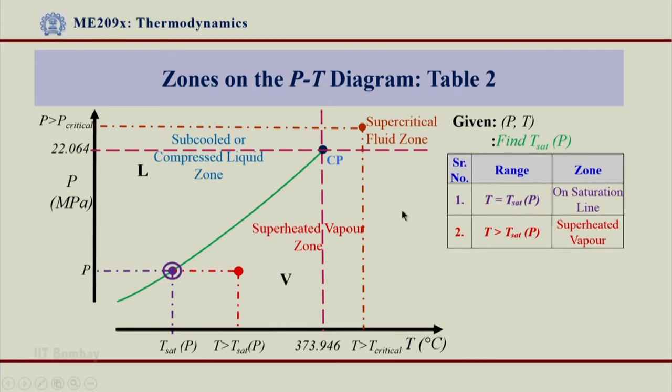Now, the third case is if temperature is less than T_sat(P), then obviously the state lies in a subcooled or compressed liquid zone. I think it is very simple to understand from here. I am just comparing temperature with the T_sat(P) value.